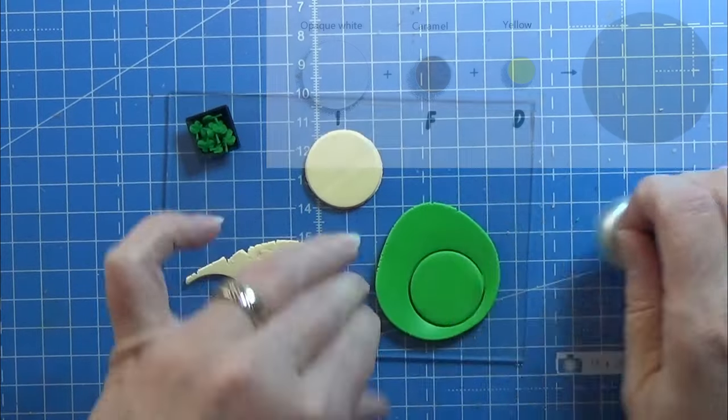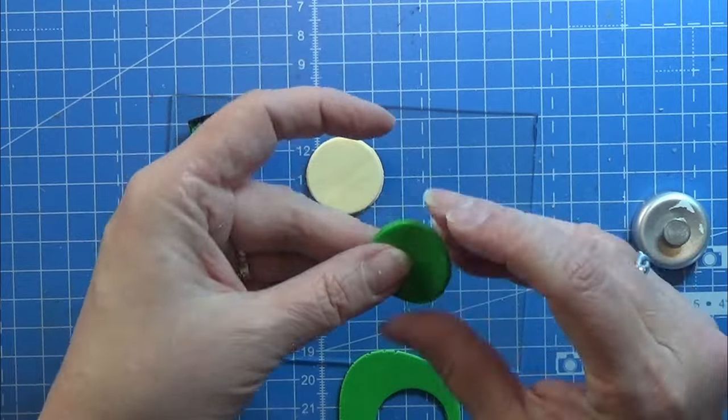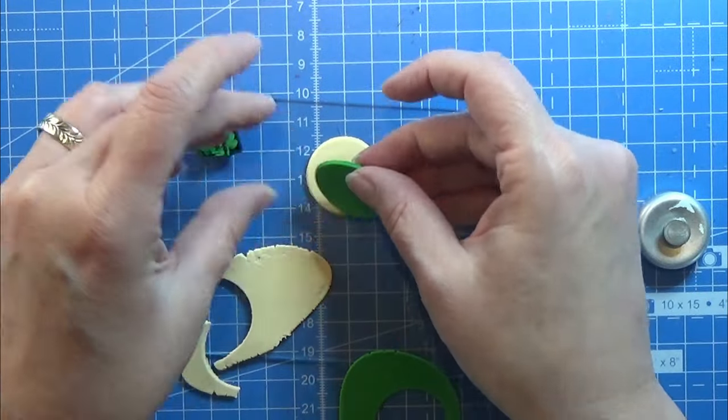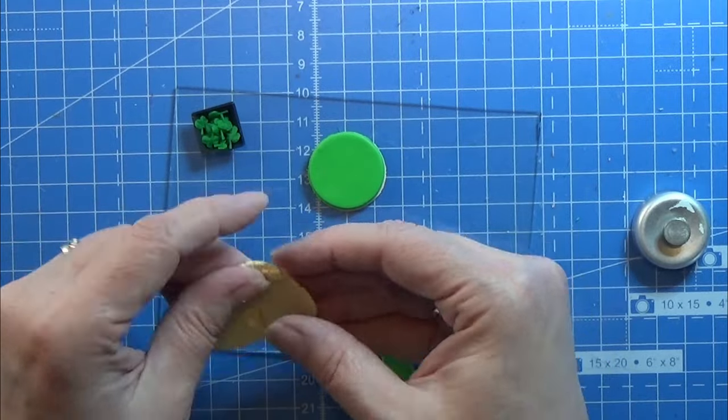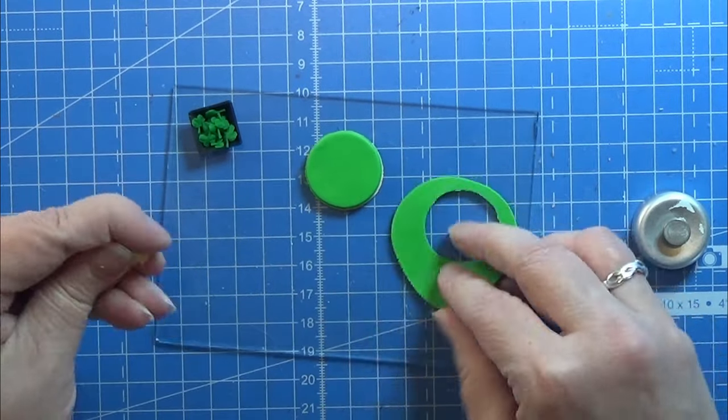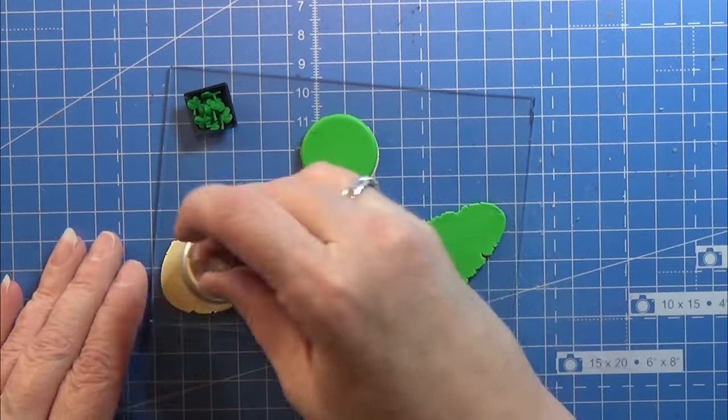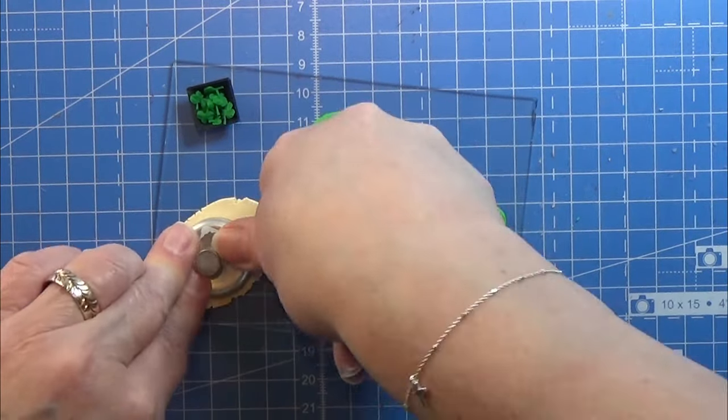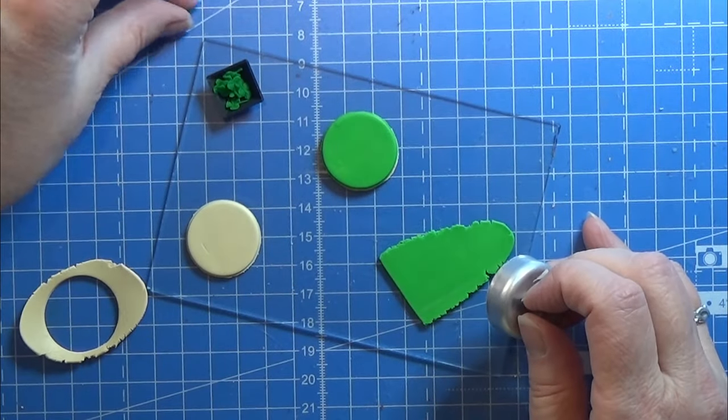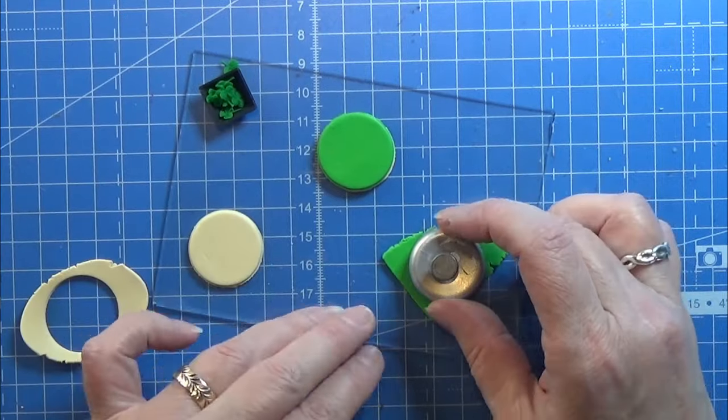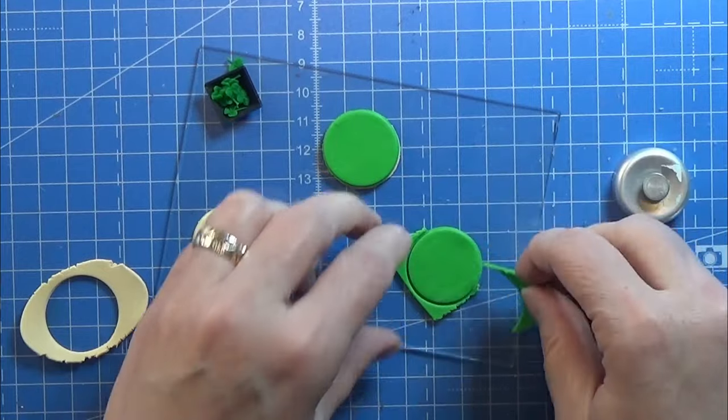And some of my rest green that I have here also. I rolled this out on a setting I think it was 5. And I am just layering them. First a dough colored, then a green, then a dough colored, then a green, and then a dough colored again. All right.